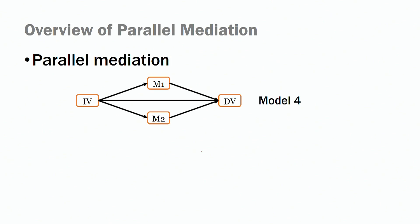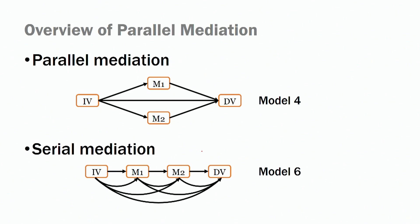So what are serial mediation models? We will compare them to the parallel mediation model, which we covered in our prior session. In a parallel mediation model, we have multiple mechanisms connecting our independent variable to our dependent variable — job meaningfulness to job performance via job engagement and commitment. But now we are talking about serial mediation models, where the independent variable influences the dependent variable via a series of mediations.